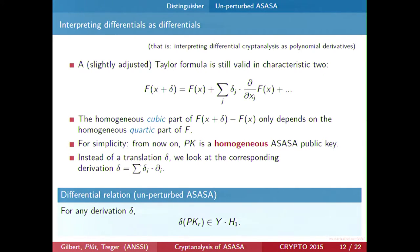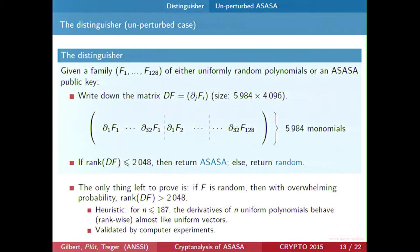Instead of translation delta, we look at a derivation, written as a formal sum of derivatives over each variable with some coefficients. Because of the Taylor formula, translation and derivation are really the same — we still have this differential relation: for any derivation delta, the derivative of any public key term belongs to the space capital Y dot H1, the product of the middle layer by all linear forms.